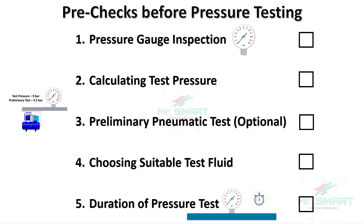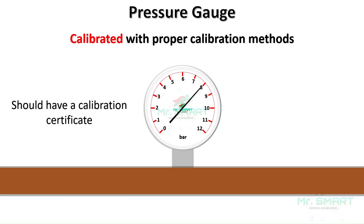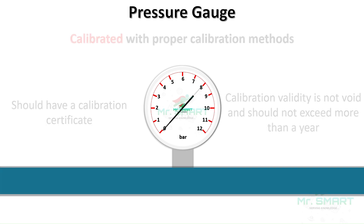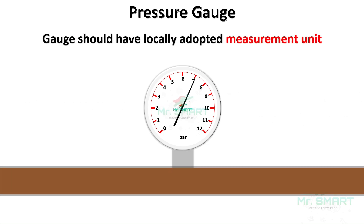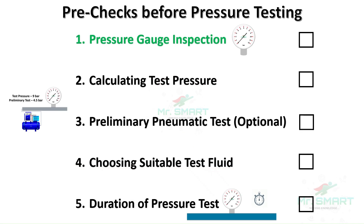Before starting any pressure test, some key pre-checks must be completed, starting with pressure gauge inspection. The pressure gauge should be calibrated with a valid certificate, and the validity period should not be more than one year. Choose a gauge that uses locally adopted units, whether bar, psi, kilogram per centimeter squared, or any other unit used in the local region.